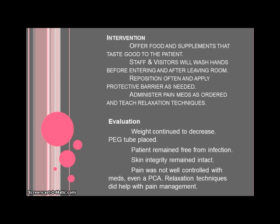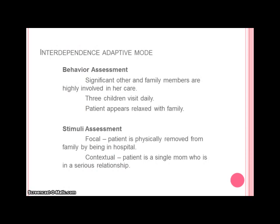Once we've started our interventions, we go on to evaluation. We see that her weight continued to decrease, so a PEG was placed. The patient did remain free of infection and her skin integrity remained intact. But her pain was not well controlled with medications, even with a PCA pump. Relaxation techniques did help with some pain management, but essentially she ended up going for a celiac plexus block. With our patient's physiologic mode, we saw that her level of adaptation was definitely compromised.